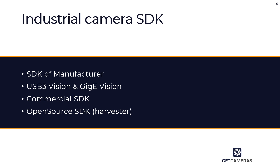To overcome this problem, there is a standard called USB3 Vision and GigE Vision. Most industrial cameras are compliant with these standards. However, to control the camera using an SDK you need one that is USB3 Vision or GigE Vision compliant. Commercial SDKs are available for this, but they cost mostly between 150 and 500 euros.